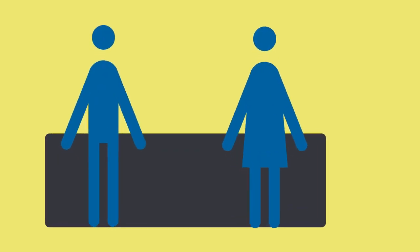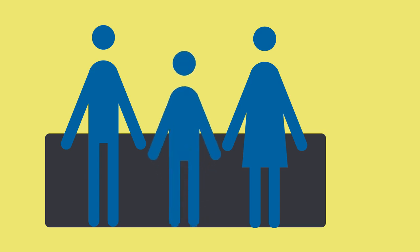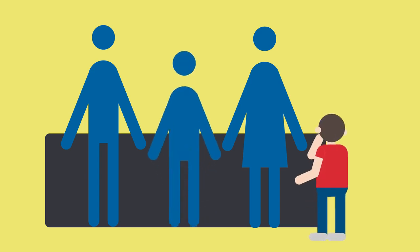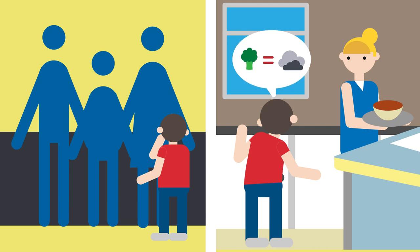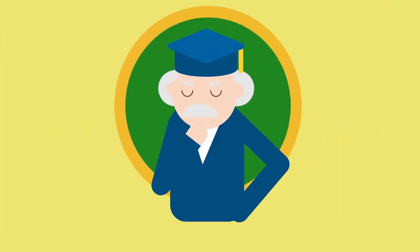Many characteristics are due to a combination of both genetics and the environment. For example, the height a person can grow to is determined by genetics — tall parents tend to produce tall children. However, a person will not grow to their potential height unless they eat a healthy balanced diet.